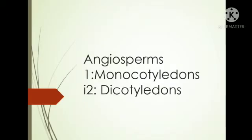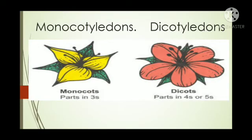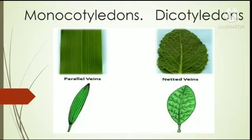Angiosperms are divided into two classes: monocotyledons and dicotyledons. In monocotyledon plants, the floral parts are usually arranged in groups of three, while in dicotyledon plants the floral parts are usually arranged in groups of four or five.